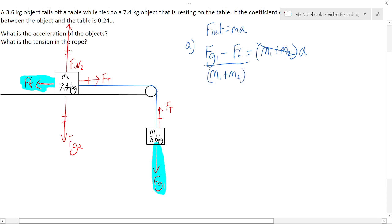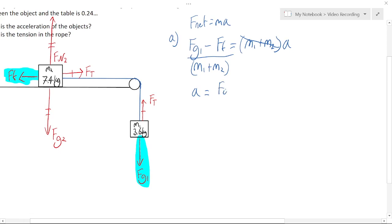We're looking for a acceleration. So I'm going to go ahead and divide both sides by m1 plus m2. Now if we switch our left and right in our algebra here, we get a equals Fg1 minus Ff over m1 plus m2.